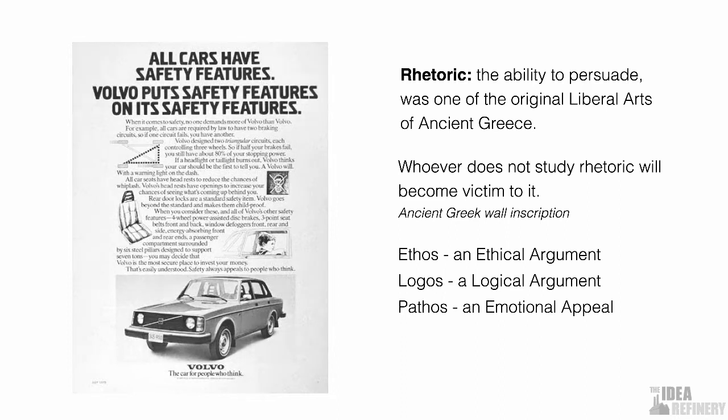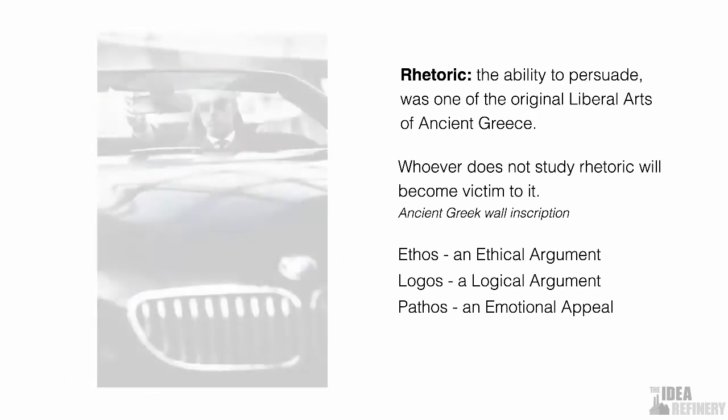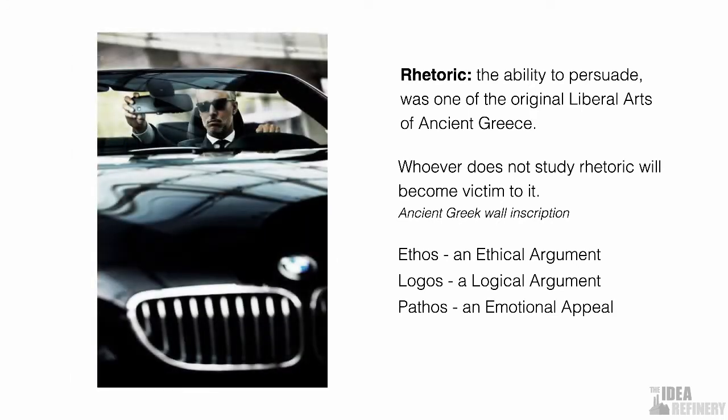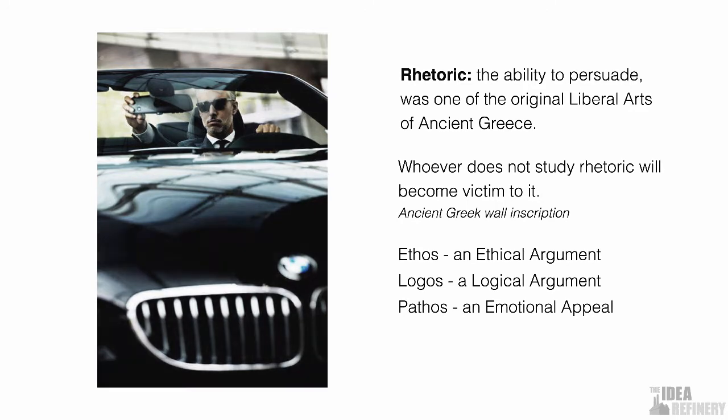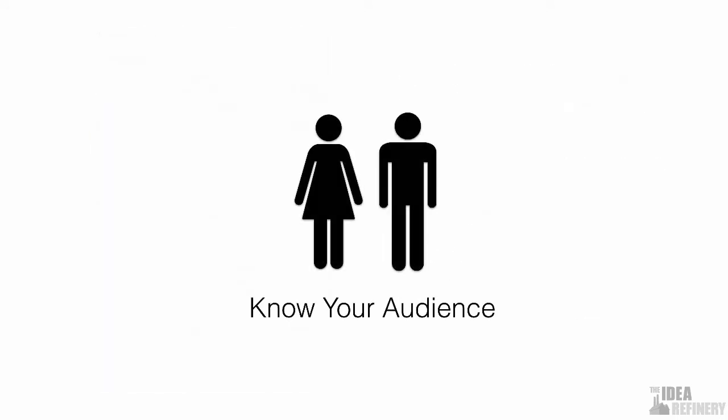But much more regularly, we see advertisements like this — pathos, an emotional appeal. The emotion that it's appealing to is one of desire. It's an aspirational image that some of us may aspire to. Again, this car manufacturer knows its audience. What all of these arguments slash advertisements have in common is that they know their audience.